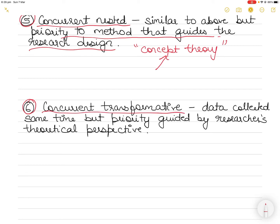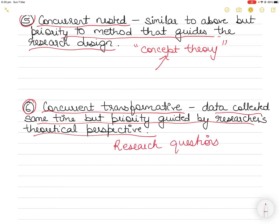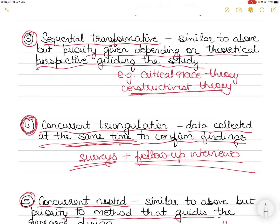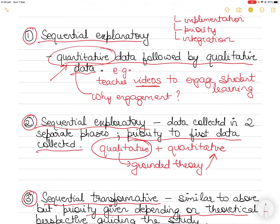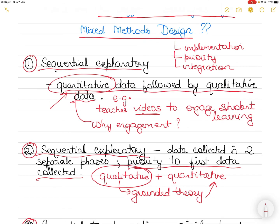Finally, in the concurrent transformative strategy, data is collected at the same time, but the priority and integration are guided by the researcher's theoretical perspective. Just like the sequential transformative strategy, the process is heavily guided by the transformative nature of the research questions. Ultimately, it all comes down to what is at the center: is it the theory, the research design, the research question, confirming findings, or a sequential relationship between methods? That determines the implementation, priority, or integration.